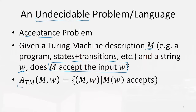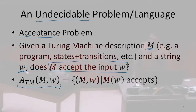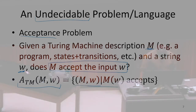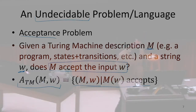What I'm going to talk about right now is this language ATM — the acceptance language — which is the set of all machine-input pairs, so all strings where that's a description of a machine and an input for that machine, such that that machine, when running on that input, will accept or return one.